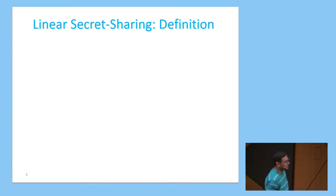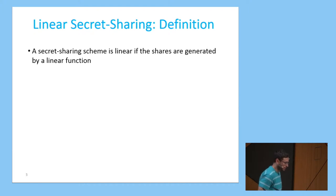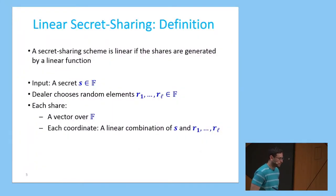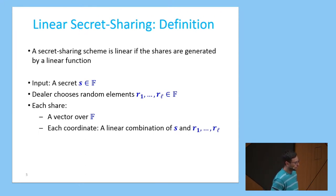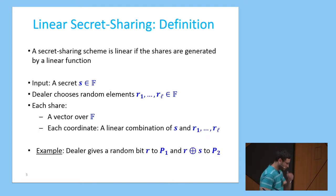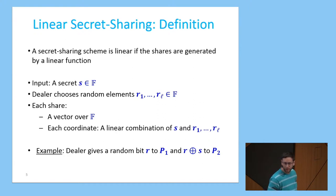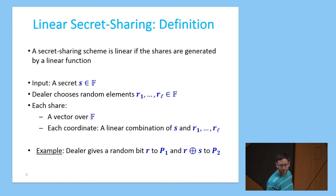In our work we consider linear secret sharing schemes. A secret sharing scheme is linear if the shares generated by the dealer are produced by a linear function. More formally, the secret is an element of a finite field, and to create the shares, the dealer chooses random elements from the finite field. Each share is a vector over the field where each coordinate is a linear combination of the secret and the random elements. The previous XOR example is a linear scheme over the field F2.